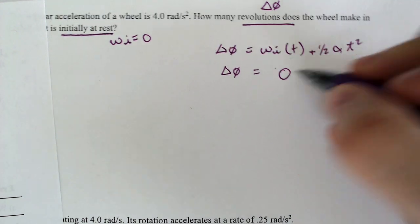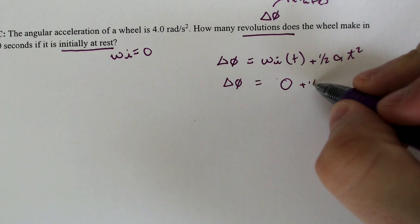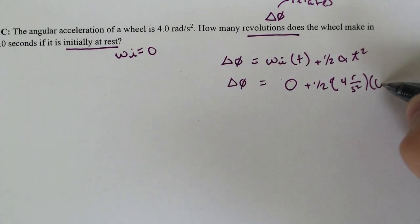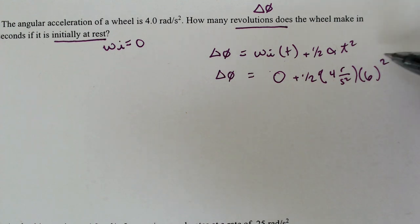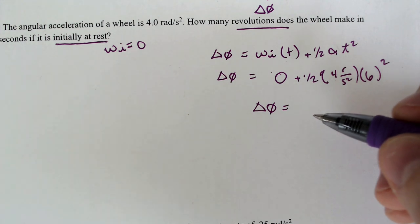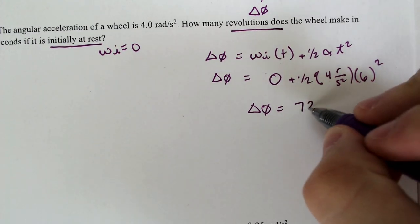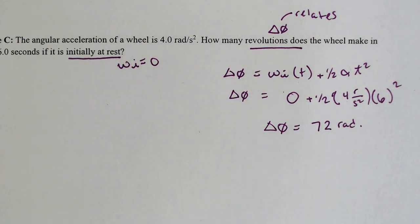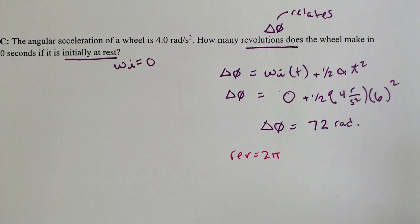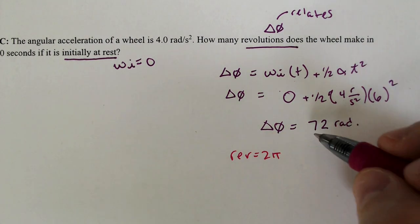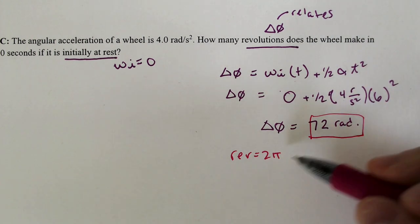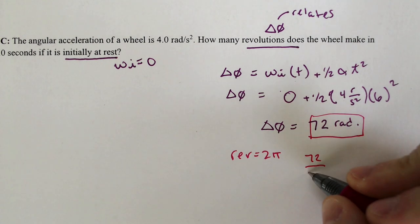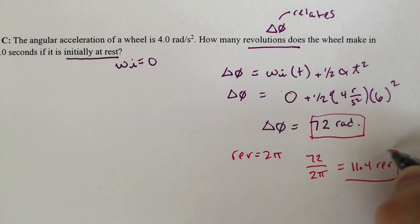Δθ will equal wi times t plus one-half α t squared. So our change in our angle will equal our initial velocity, which is zero. Times t would still be zero plus one-half α. What is our α? We were going at 4 radians per second squared times our time, which is 6. We do the math here. We do 6 squared times 4 times one-half. You find out that the change in angle that you get is 72 radians. Now it is not asking for the angle. It is asking for how many revolutions it is. Well, remember that each revolution is equal to 2π. If each revolution is equal to 2π, we have 72 radians here, we need to figure out how many times that happened and therefore we would divide by 2π to figure out how many revolutions that would be. So if you do 72 divided by 2π, you get 11.4 revolutions.